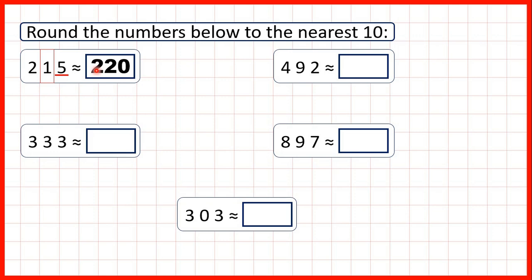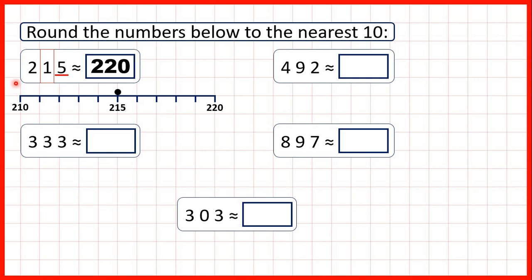The two in our hundreds stays the same. Because we're rounding up, the one in our tens turns into a two, and when we're rounding to the nearest 10, the ones digit always turns into a zero. On a number line, we can see that 215 is between 210 and 220 — those are the closest multiples of 10. Now 215 is right in the middle of 210 and 220, but when it's right in the middle, we always round up.